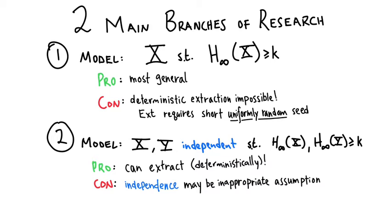The second branch of research does not require a seed, but instead makes a structural assumption on the source of randomness itself. It considers the setting where you're given two independent sources of randomness, each with sufficient entropy. The advantage is that you can in fact extract. The disadvantage, obviously, is that you're making a structural assumption — assuming these sources are independent. And maybe in certain settings, this assumption may be inappropriate.